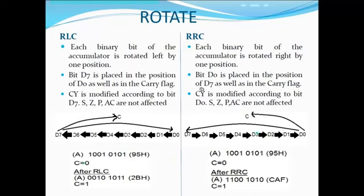In RRC, it rotates the contents to the right by one position. Bit D0 is placed in the position of D7 as well as in the carry flag. The carry flag is modified according to bit D0, and the other flags are not affected.